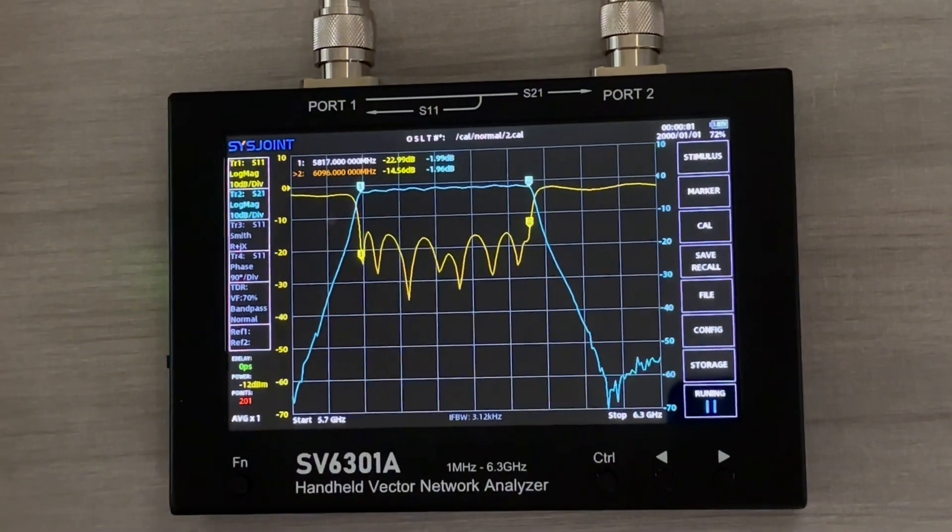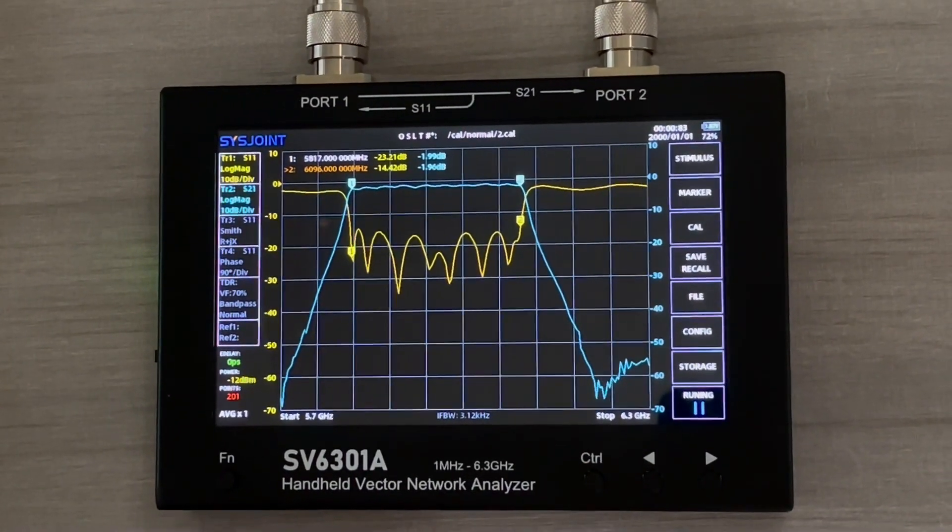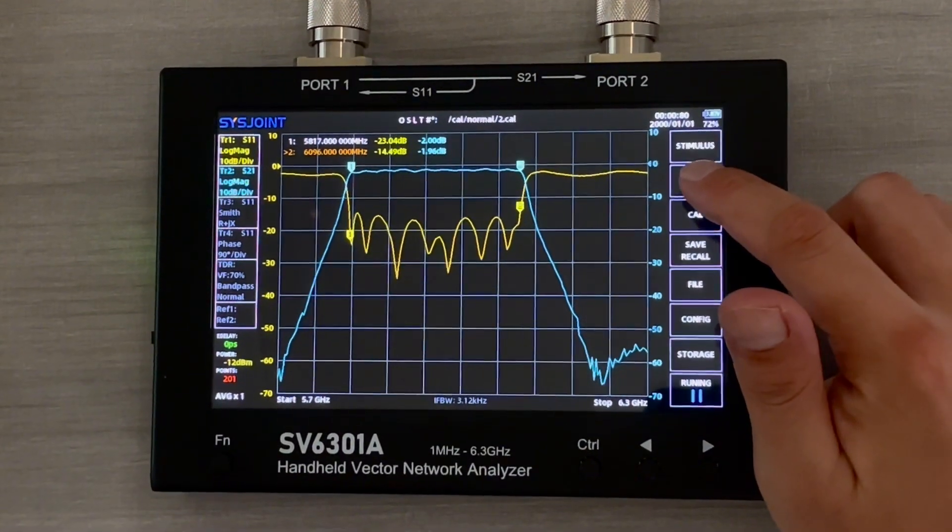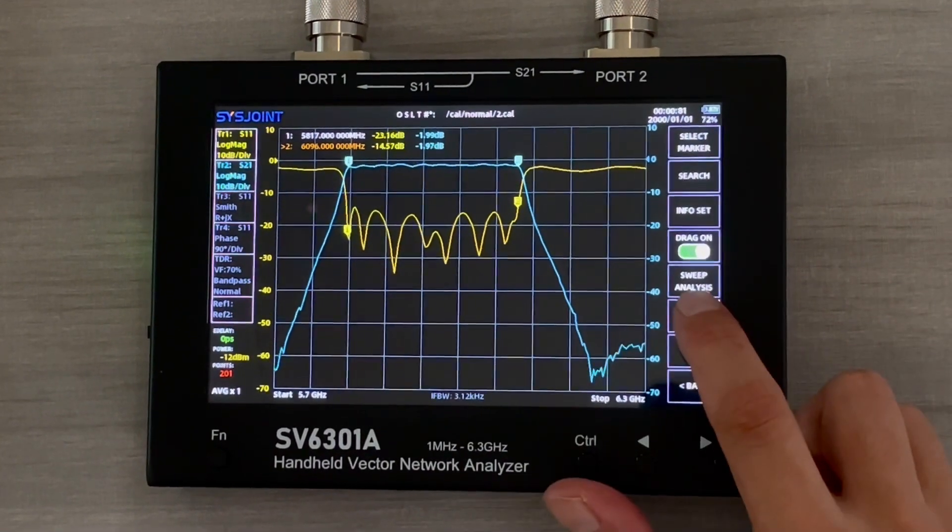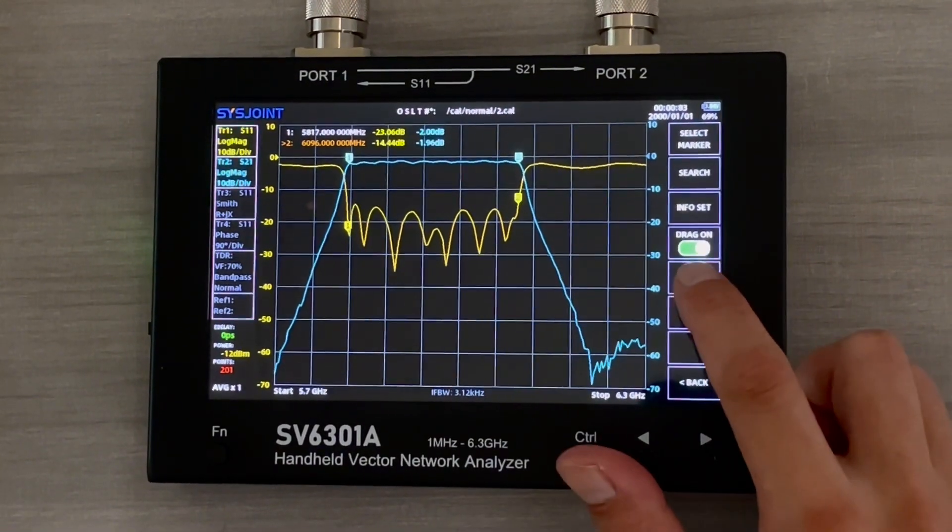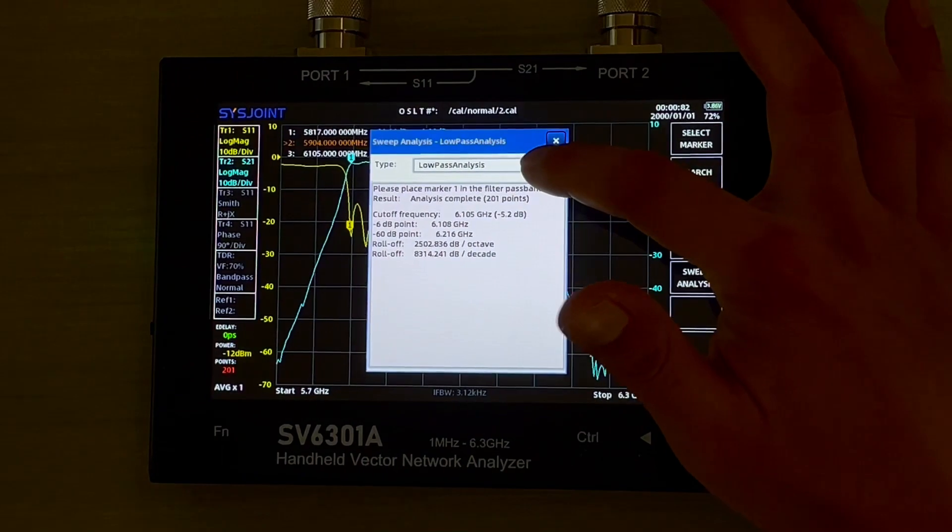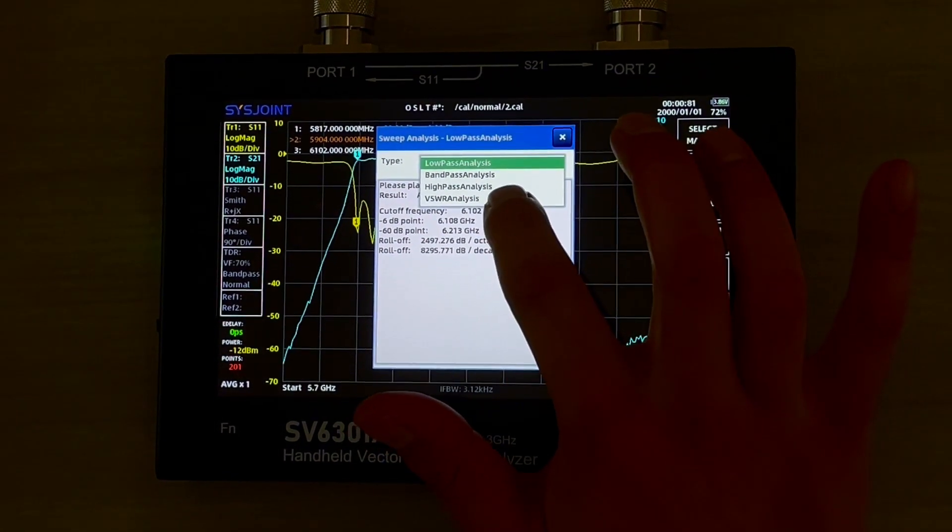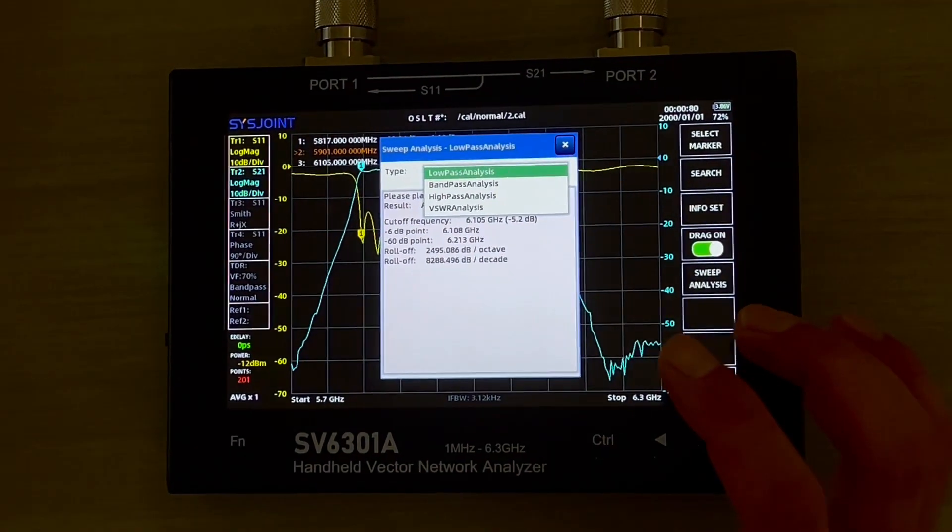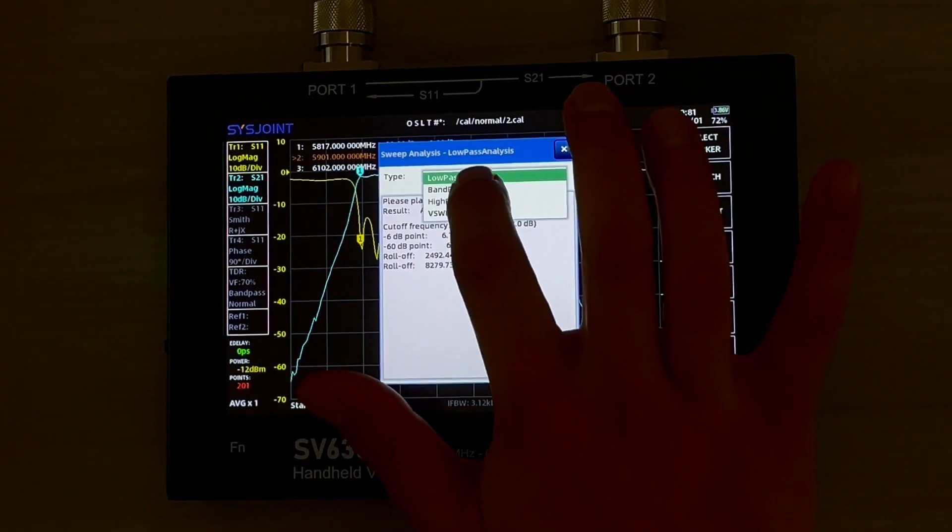Another function of this device we can do is here. We can simply click the marker button and there's a sweep analysis. We want to click it. We want to go to the bandpass analysis because this is a bandpass filter, apparently. We go to bandpass and click it.